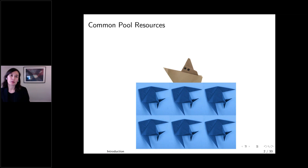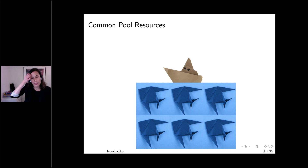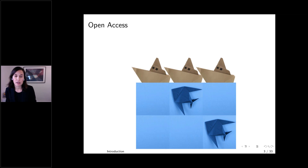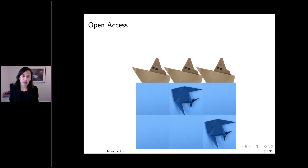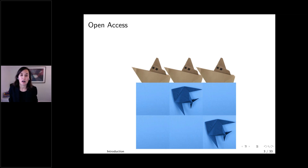A common pool resource is a resource for which it is difficult to exclude users. Economists, biologists, and other scientists have shown that the collective outcome of a common pool resource is suboptimal — there can be both biological degradation, meaning the resource stock is at a suboptimally low level, and also economic degradation, where economic welfare or fishing rents are degraded due to incentives for users to compete with each other.